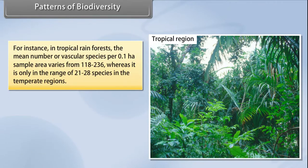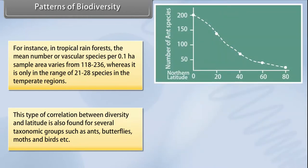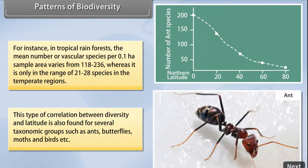For instance, in tropical rainforests the mean number of vascular species per 0.1 ha sample area varies from 118 to 236, whereas it is only in the range of 21 to 28 species in temperate regions. This correlation between diversity and latitude is also found for several taxonomic groups such as ants, butterflies, moths, and birds.